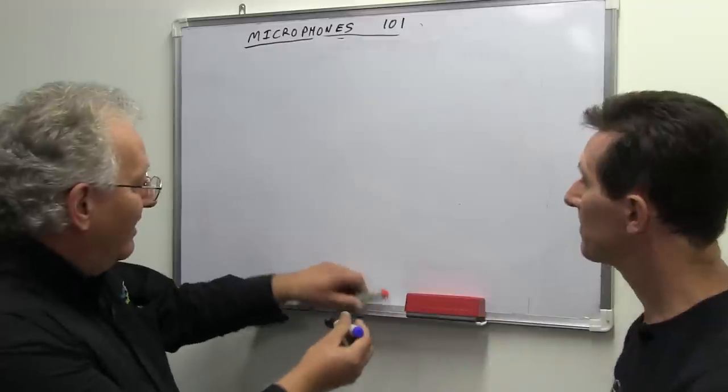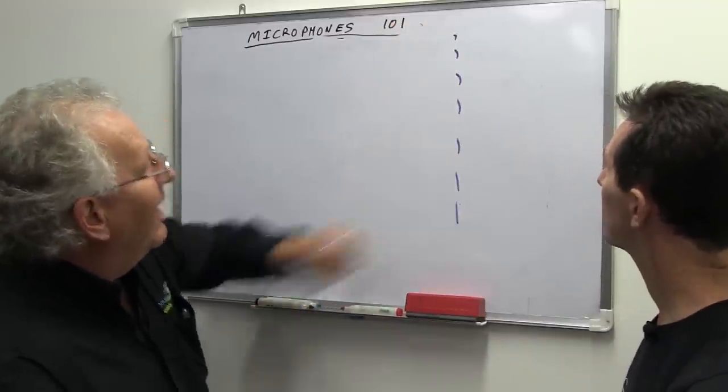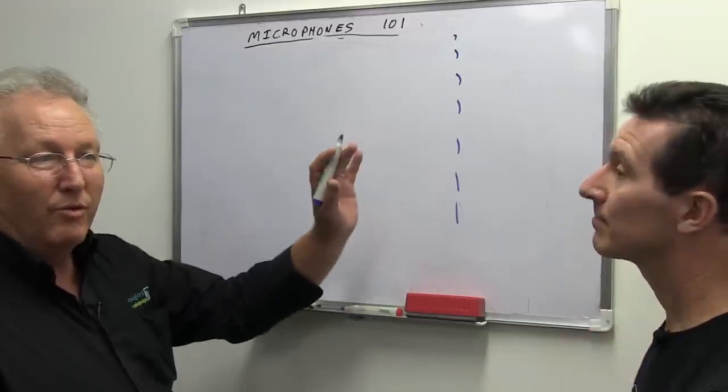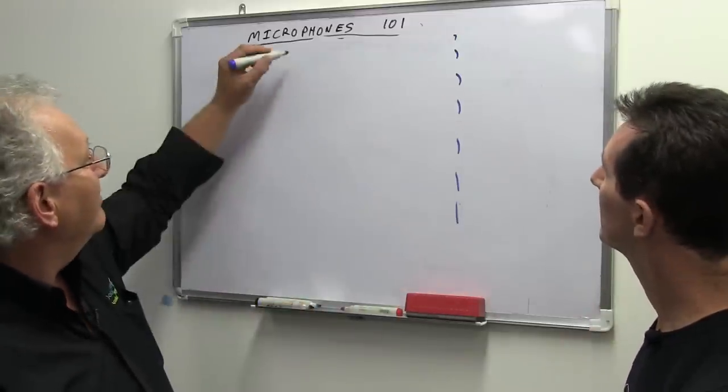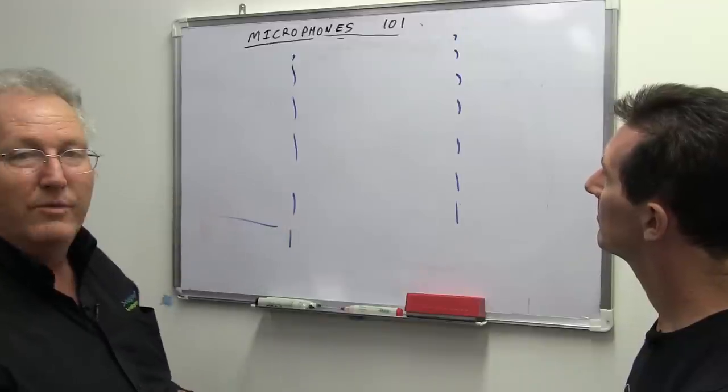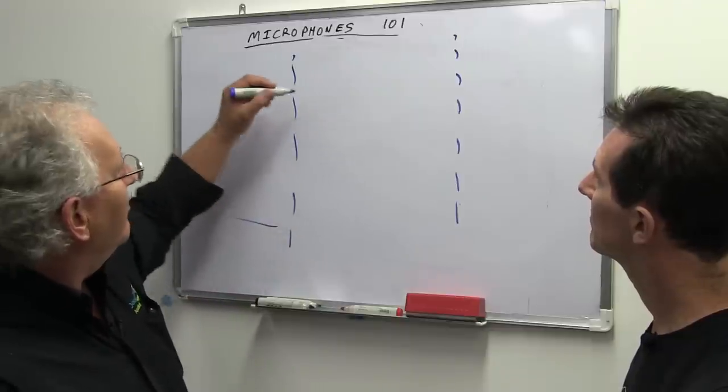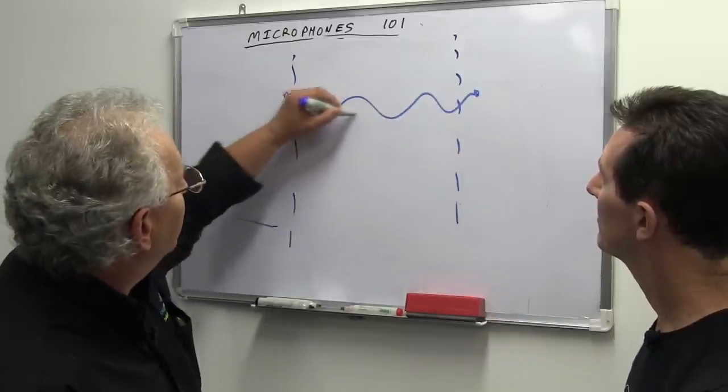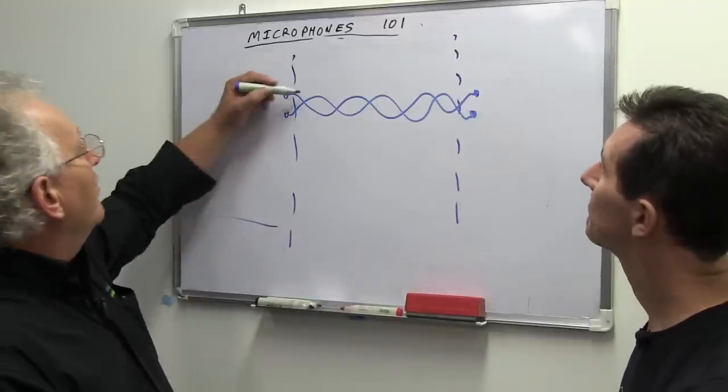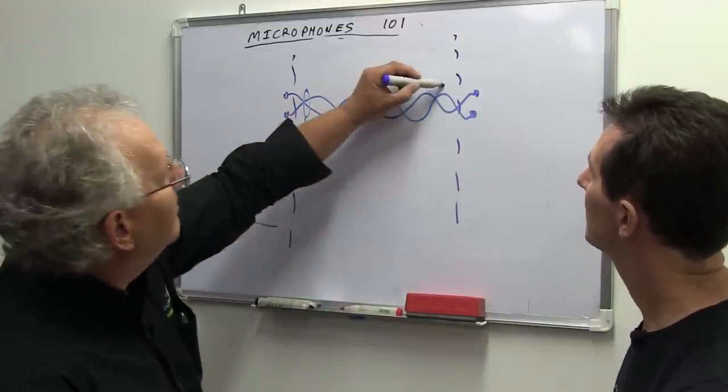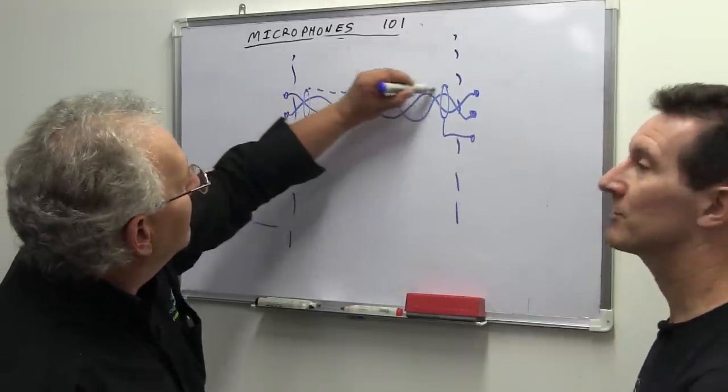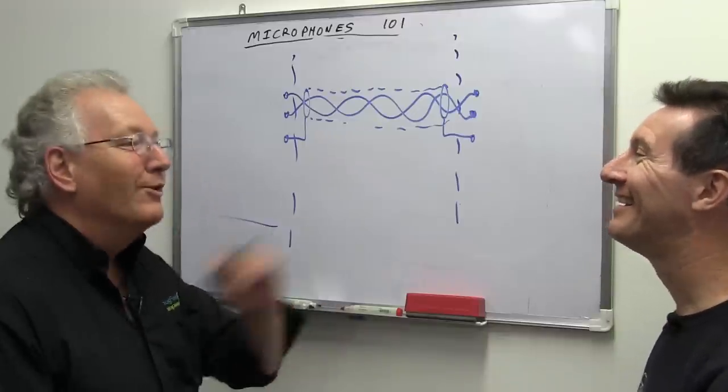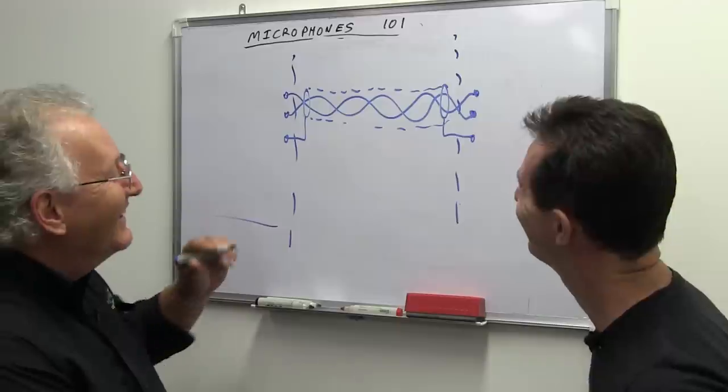Over on this side, we have the mixer, or the microphone preamp, or whatever it is that's going to receive the microphone signal. Down over on this side, we have the microphone itself, and in between, we have a twisted pair. It's typically XLR connectors. Any brand preferences? Amphenol, it's got to be Amphenol, yep.